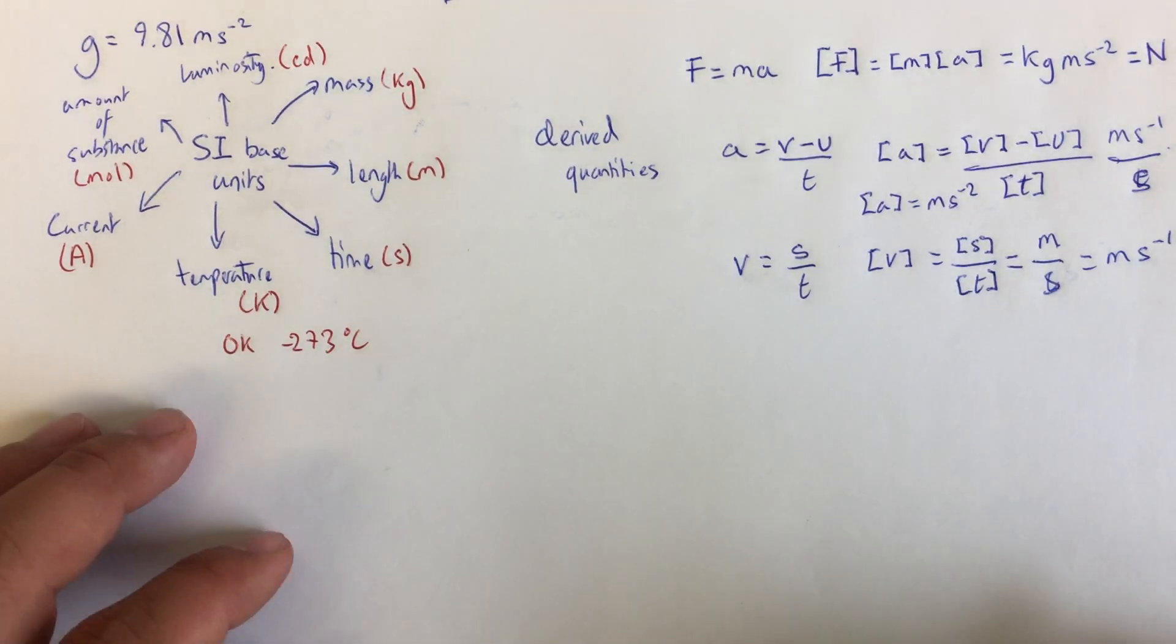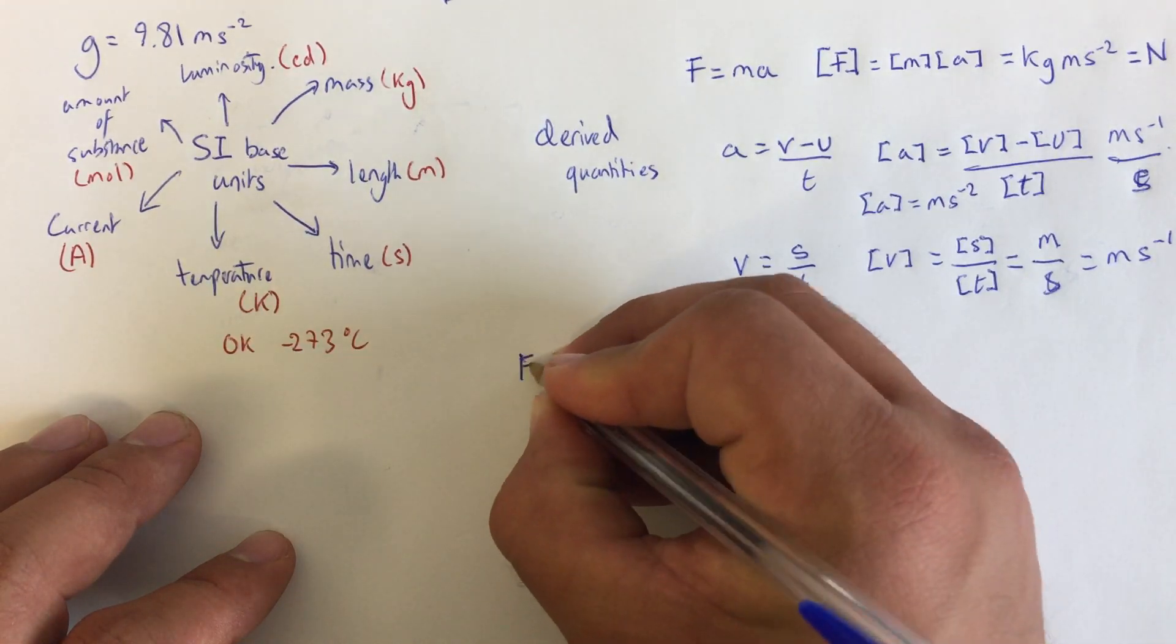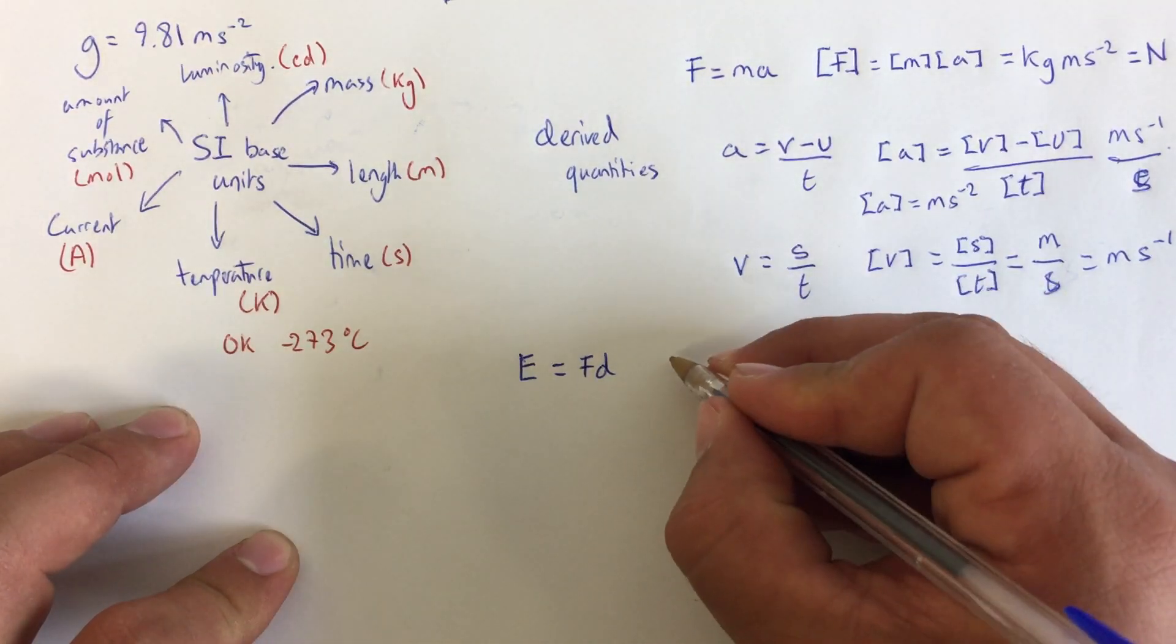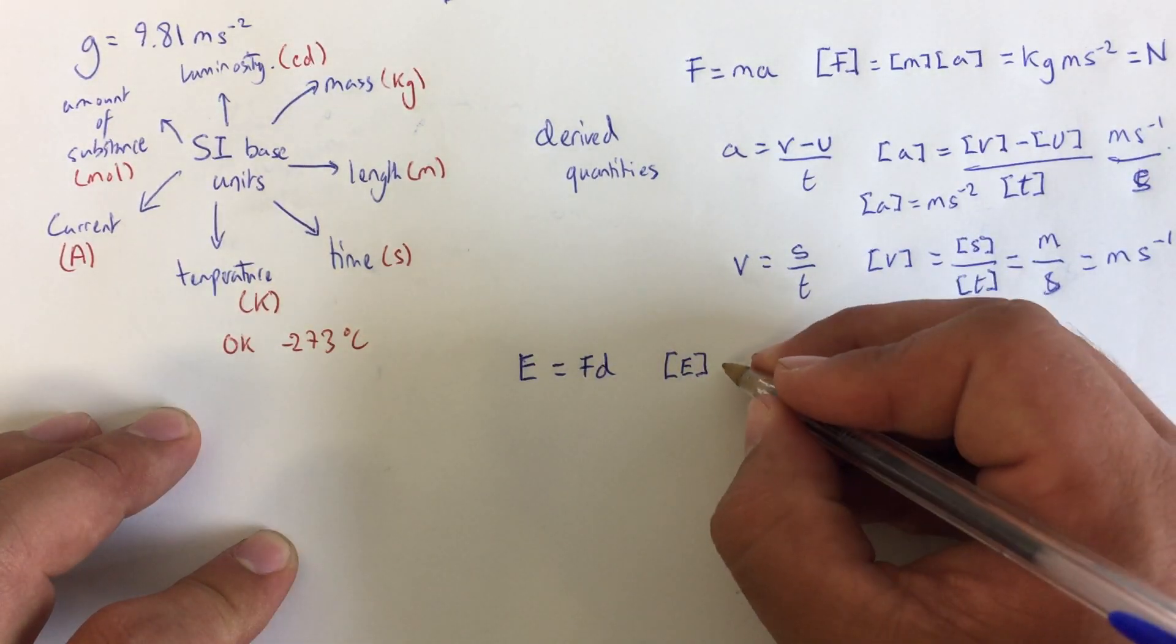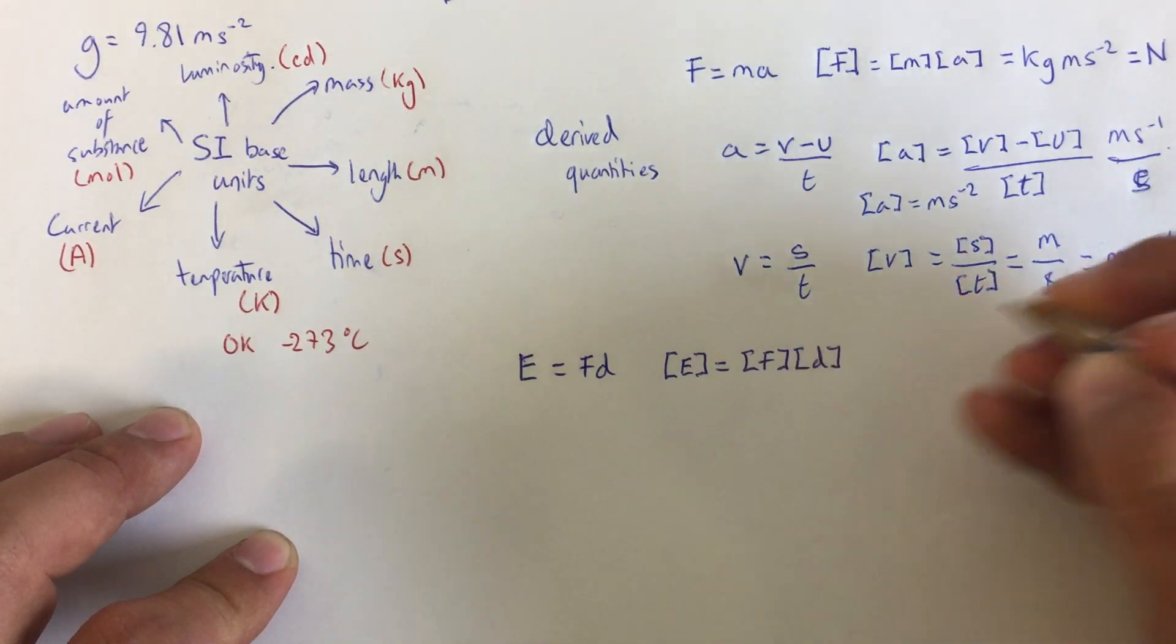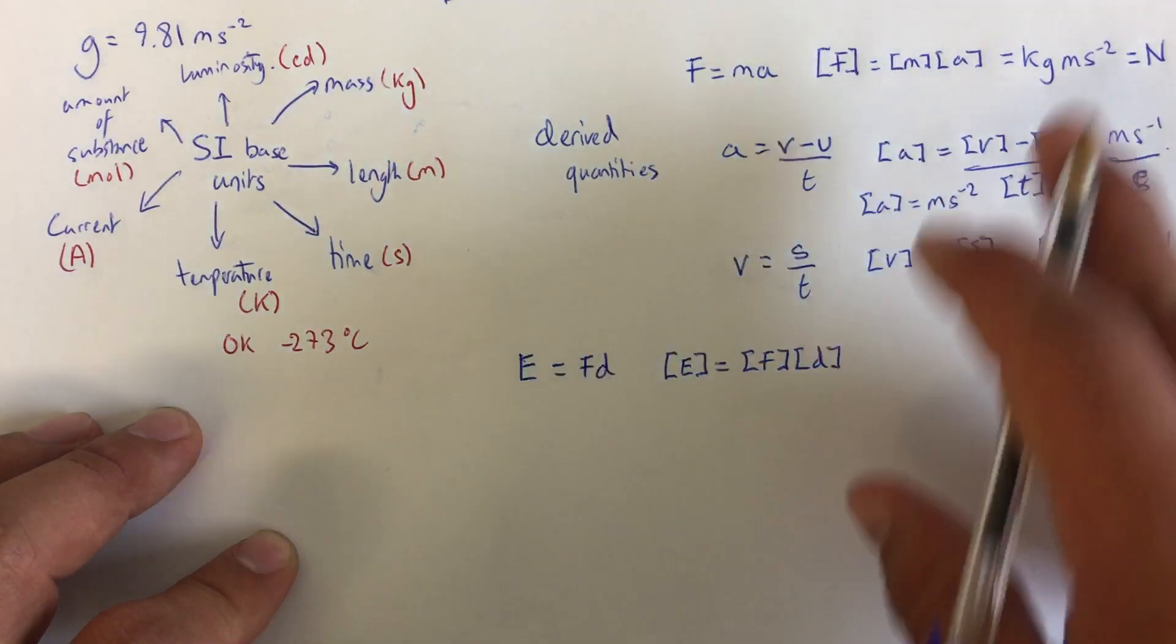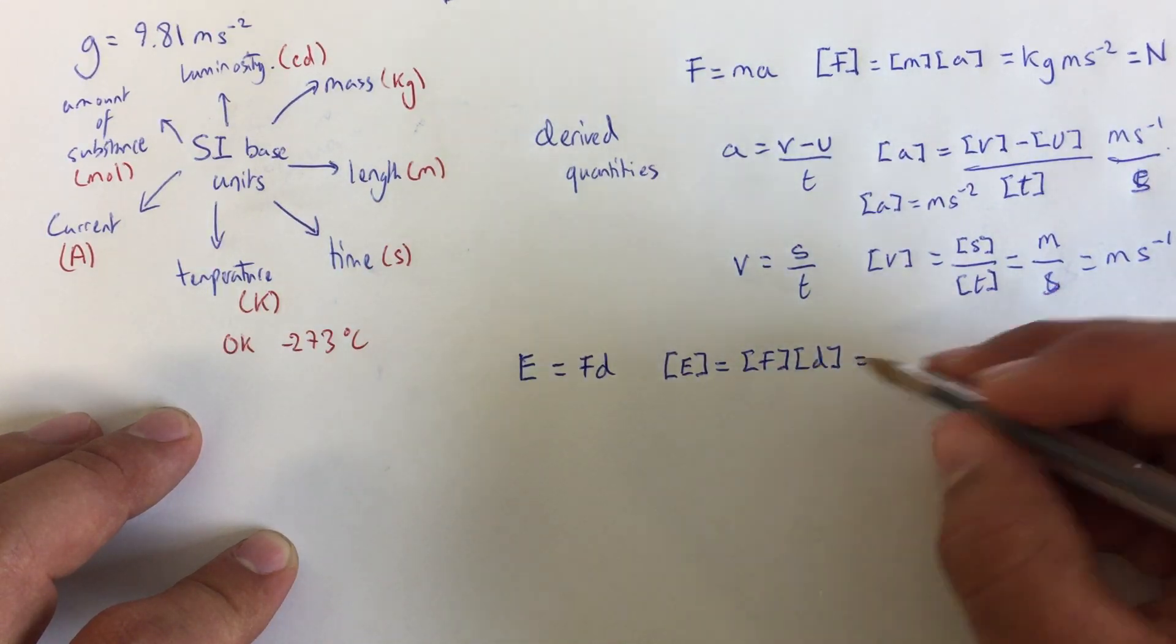Another example of this is the equation for work done. Work done, and remember work done is the same as energy. The equation for that is force multiplied by distance. So if I say the unit of work done, or the unit of energy, is going to be equal to the unit of force times the unit of distance. Now the unit of force, we could say, well force, we know the equation for force is M times A, and then work out the units of that and put it together. But we've just calculated what that is.